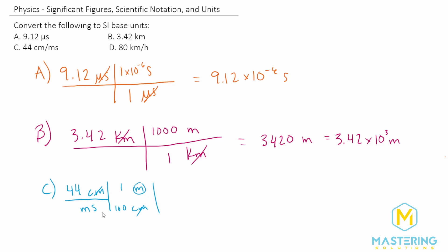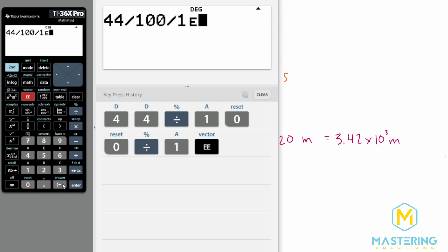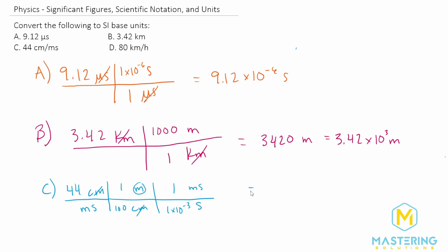But milliseconds is not in standard units. We want just seconds. So we want the milliseconds to go away. So we'll put it diagonally from that and in seconds down here. So in one millisecond, we know there is one times 10 to the negative three seconds. So now we can just plug this into our calculator with 44 divided by 100 divided by one times 10 to the negative three, which gives us 440 meters per second.